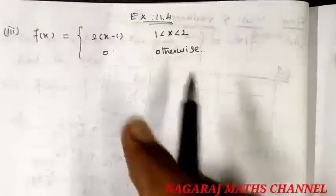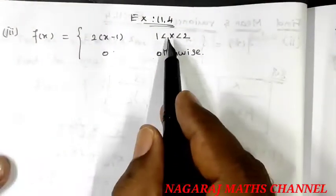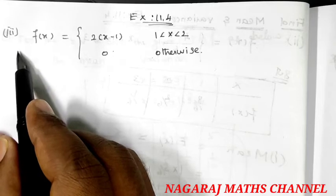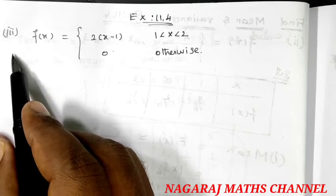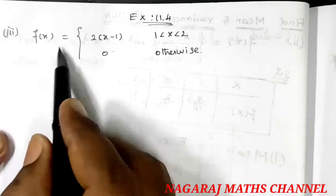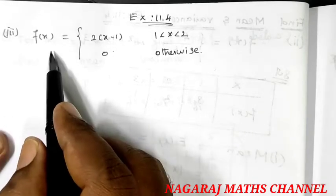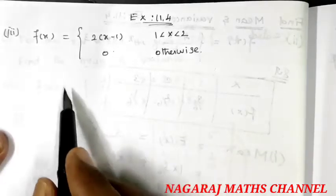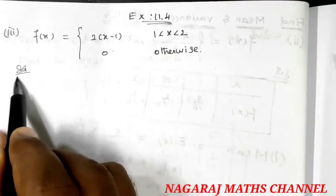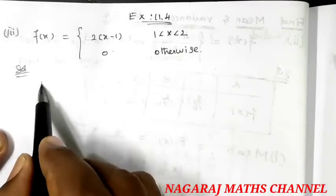Hi students! This is Example 11.4, First from Third. Find the mean and the variance. So, using the probability density function, this is the solution. First, we find the mean.